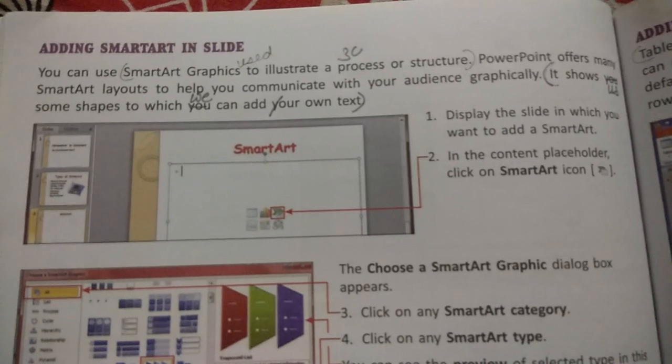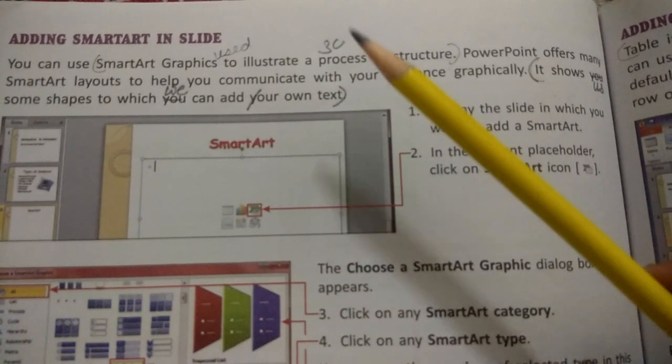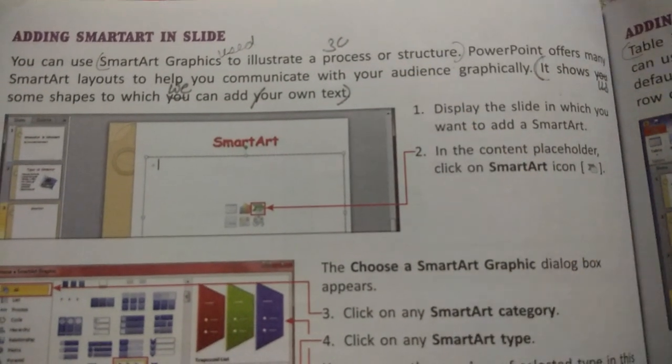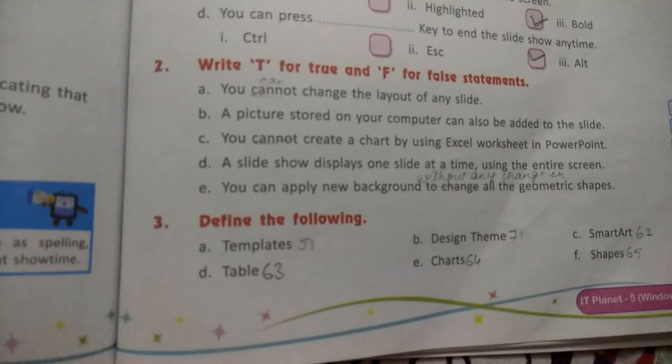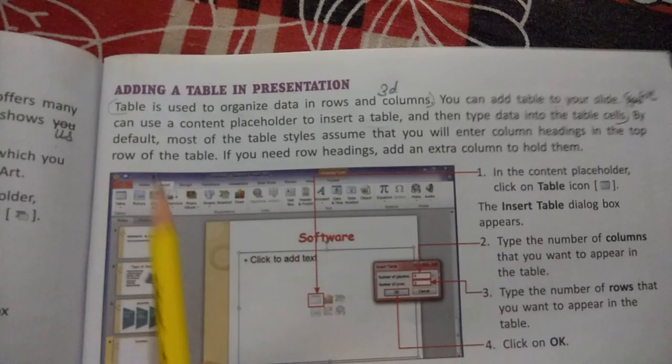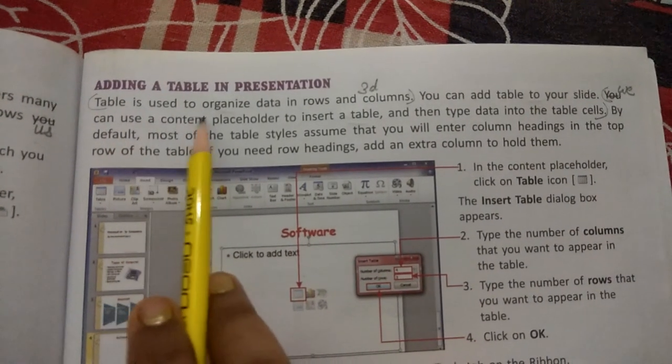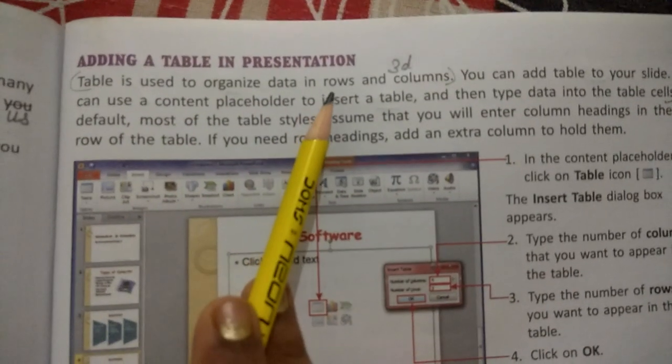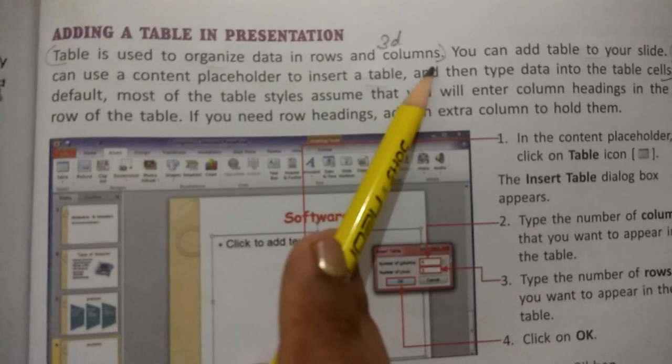For the answer, take out page number 63. Table is used to organize data in rows and columns. Cut you and write on we.